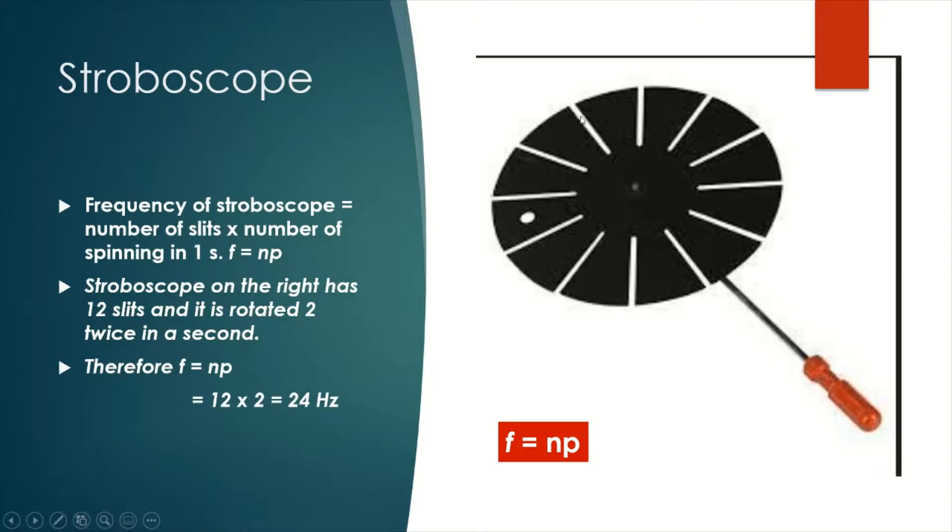A stroboscope will have many slits, some 2 slits, some 10 slits. The number of slits of the stroboscope is n, and the number of times we spin the stroboscope is p. The frequency of the stroboscope is equal to n times p, that is the number of slits on the stroboscope times the number of times we spin it in one second.